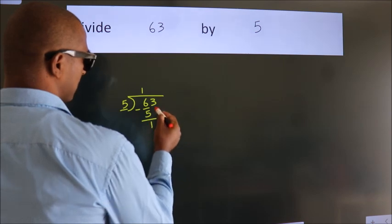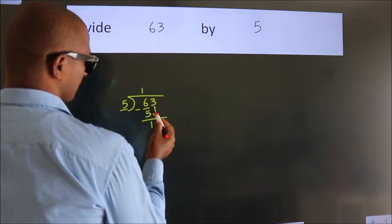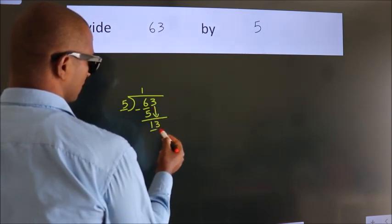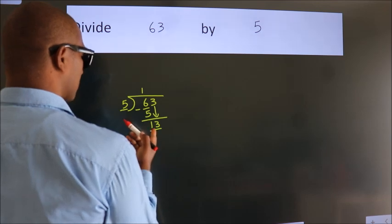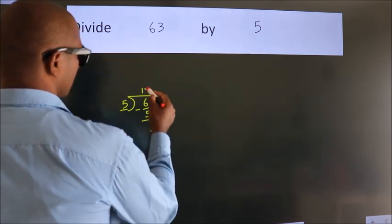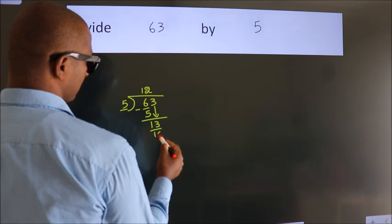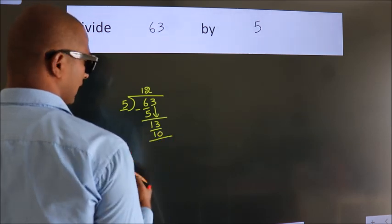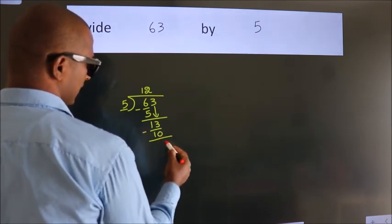After this, bring down the beside number. So 3 down, so 13. A number close to 13 in the 5 table is 5 twos, 10. Now we subtract. We get 3.